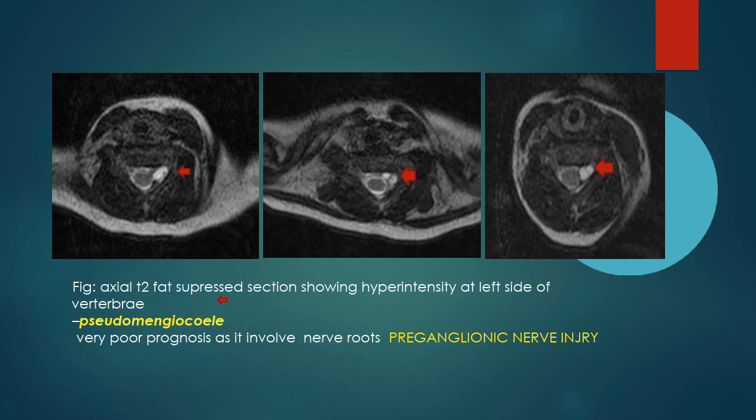In conclusion, MRI is most important not only for diagnosis but for localizing whether the injury is preganglionic or postganglionic, which determines prognosis and guides management.